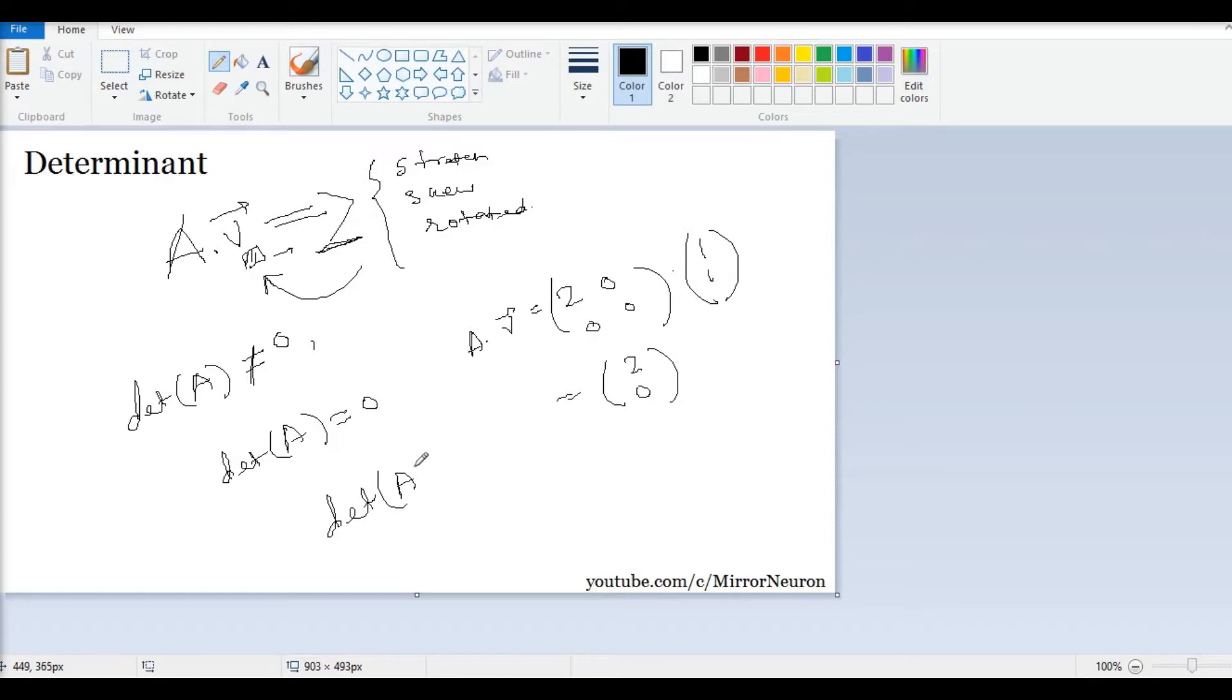How do we calculate determinant of a matrix? These two elements multiplied first, then these two: 2 into 0 minus 0 times 0, which is basically zero. Let's quickly look into the general form for two by two matrix.